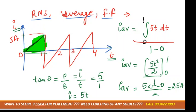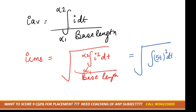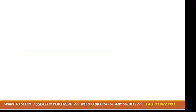Now we calculate I_rms. The formula gives the square root of the integration of (5t)² dt, divided by the base length (1 − 0), varying from 0 to 1. After simplification, the value of I_rms comes out to 5/√3.